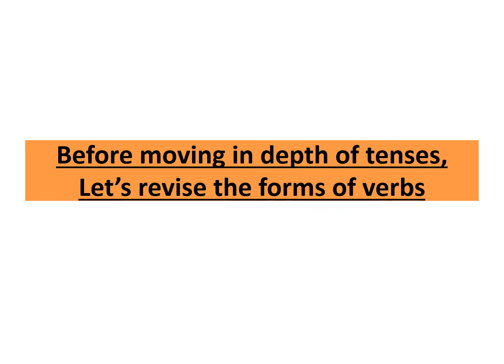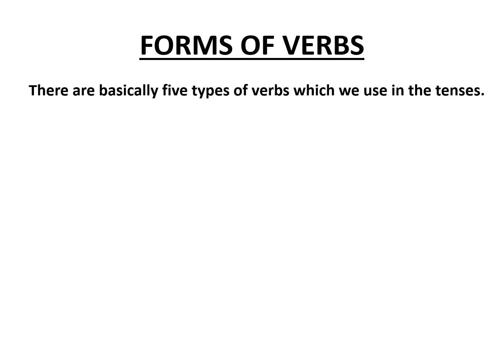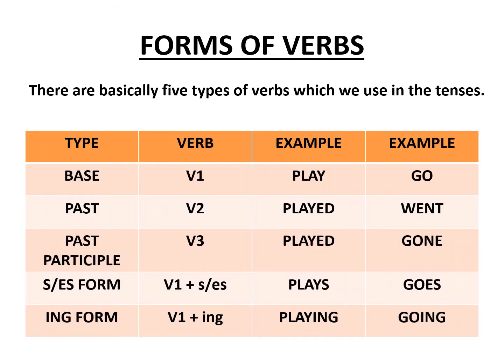Before moving in depth of tenses, let's revise the forms of verbs. There are basically five types of verbs which we use in tenses: the base or first form, the past or second form, the past participle or third form, the S or ES form (first form plus S or ES), and the ing form (first form plus ing).